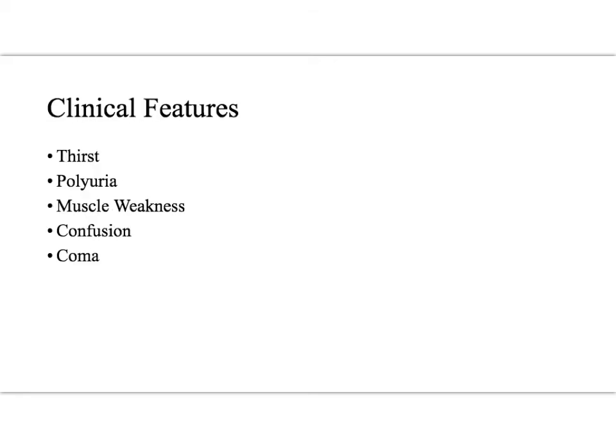The clinical features of hypernatremia are similar to those of hyponatremia in that they appear to be neurologic in nature, and they have to do with osmotic changes in the brain. Those include muscle weakness, confusion, and coma. These patients tend to be thirsty in order to prevent becoming hypernatremic, and often they'll have polyuria.